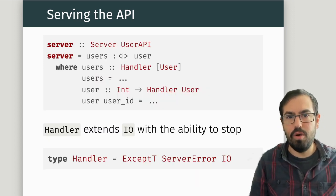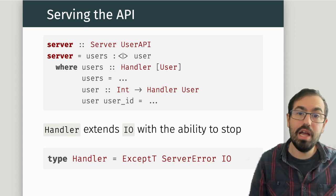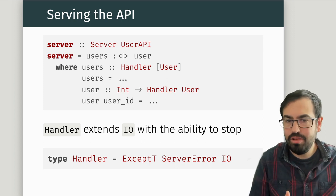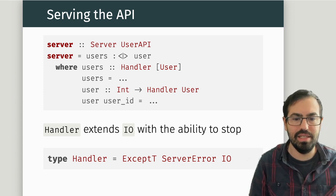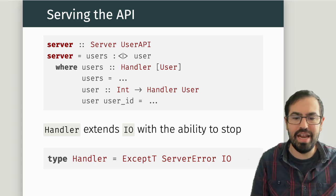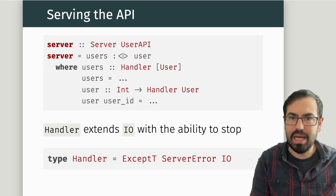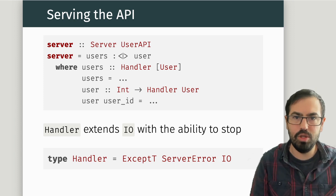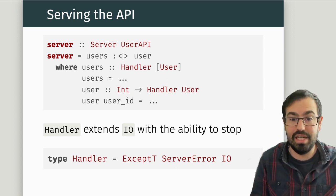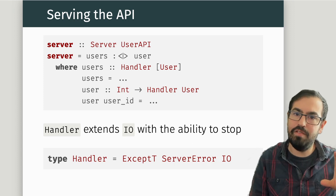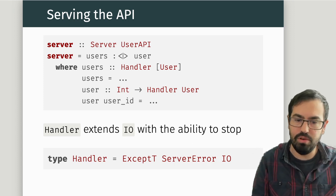Handler is something quite simple — it's just IO plus the ability to stop. It's defined as ExceptT of ServerError, which allows you to call throwError to stop the computation, and then just IO. We'll explore this kind of simple choice later on.